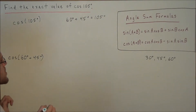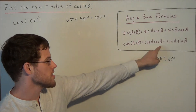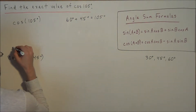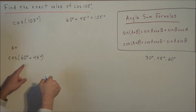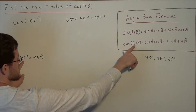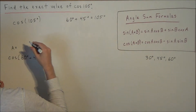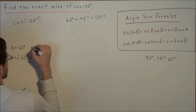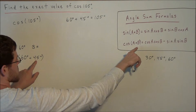And now this allows us to use the following equation. So we could set our A value equal to 60 degrees — notice how they're in the same corresponding place. So we have an A value of 60 degrees and a B value of 45 degrees.